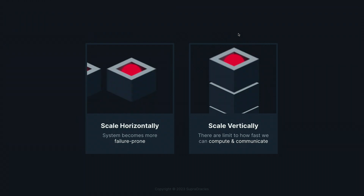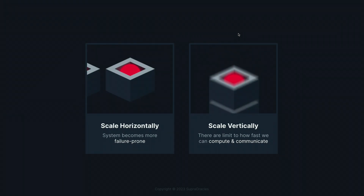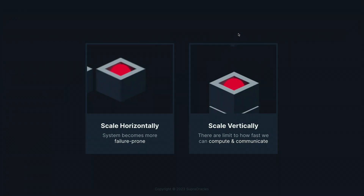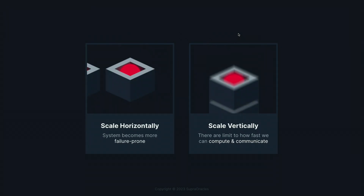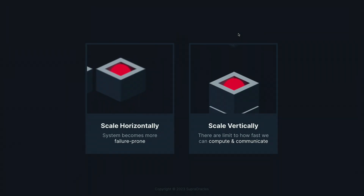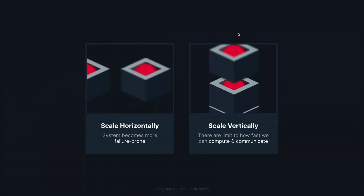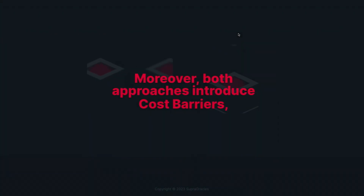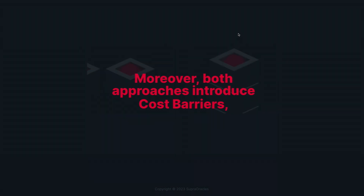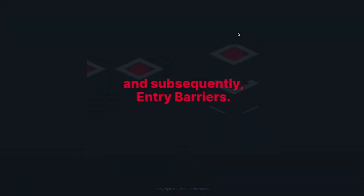Another idea is that we have nodes which are vertically scalable, in the sense that they have bigger compute power and more communication technology. However, there are limits to this, and on top of that, the system can slow down and become significantly more costly as it grows. Both approaches can bring a cost barrier because you need to add more systems, more operators, and bigger and better systems. Because of that, it becomes expensive to add new nodes, and eventually it can become an entry barrier.